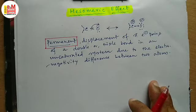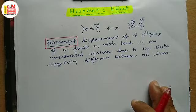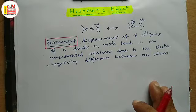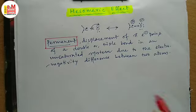In the inductive effect we discussed about the sigma electronic transmission in a covalent bond, and here we are discussing about the pi electronic transmissions — rather it's a permanent displacement of pi electron pairs of a double or triple bond.